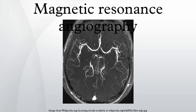An advantage of MRA compared to invasive catheter angiography is the non-invasive character of the examination. Another advantage, compared to CT angiography and catheter angiography, is that the patient is not exposed to any ionizing radiation. Also, contrast media used for MRI tend to be less toxic than those used for CT angiography and catheter angiography, with fewer people having any risk of allergy, and far less is needed to be injected into the patient.